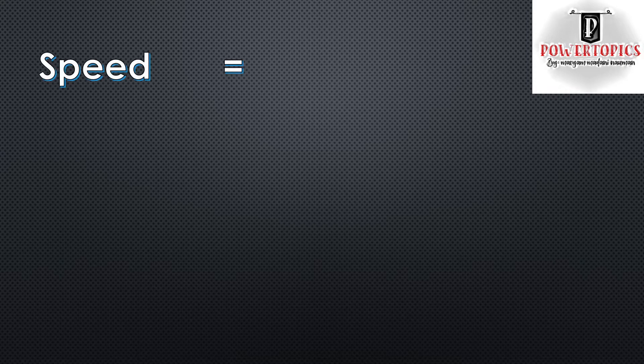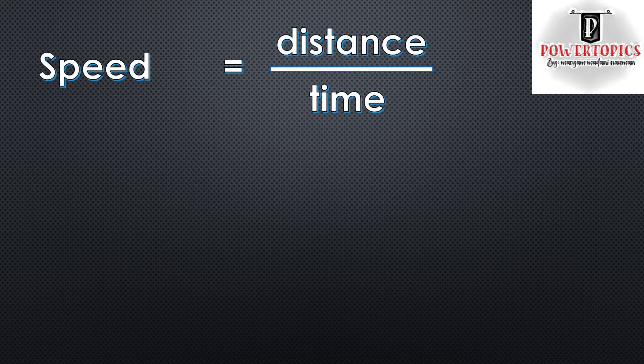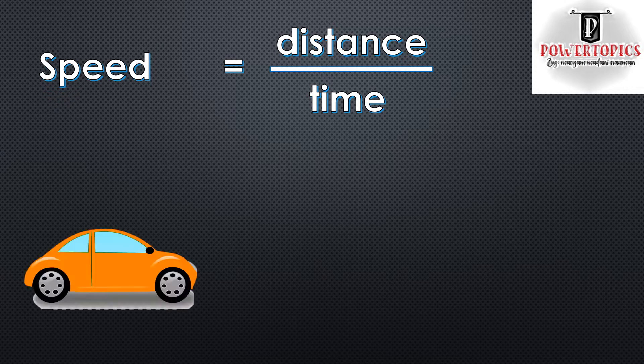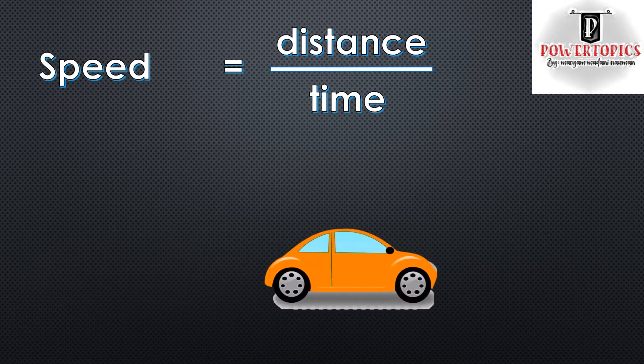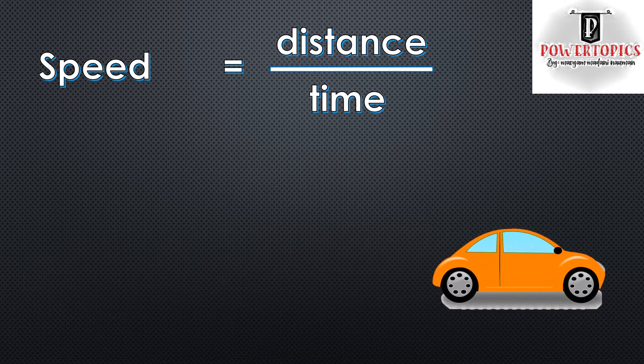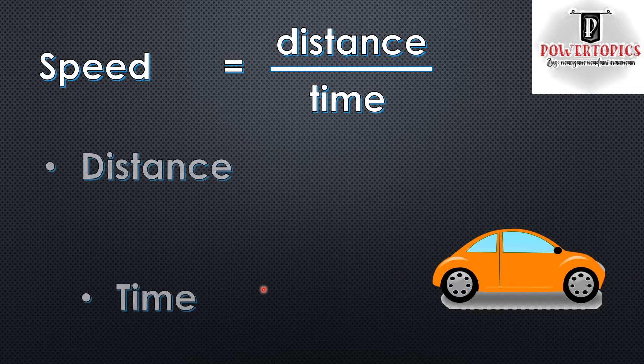To calculate the speed of something, you would have to divide the distance the thing covered by the time it took to cover that distance. You can rearrange this formula to calculate distance and time.